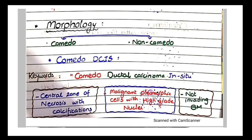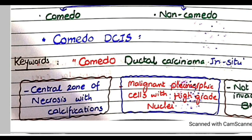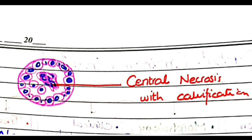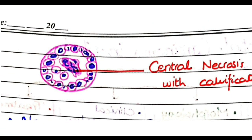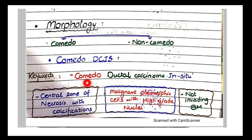For morphological features of ductal carcinoma in situ, we categorize it into two subcategories: comedo and non-comedo. In comedoductal carcinoma in situ, there are malignant cells with high-grade nuclei, and comedo means a central zone of necrosis with calcifications. As seen in this diagram of comedo type DCIS, in the lumen there is a central zone of necrosis shown by eosinophilic dead matter and basophilic-appearing calcifications.